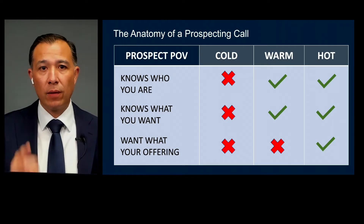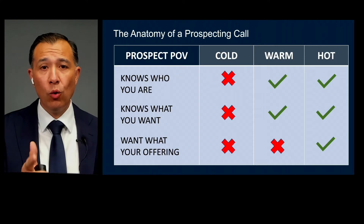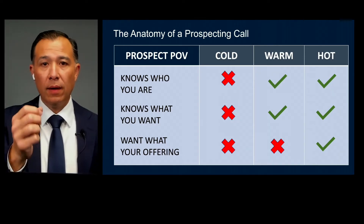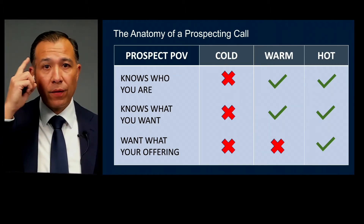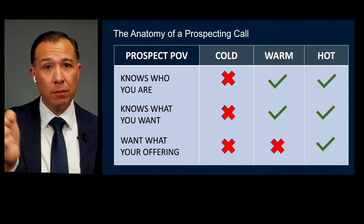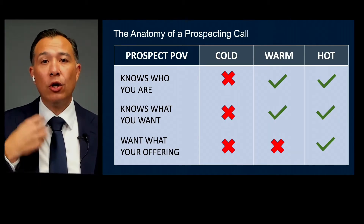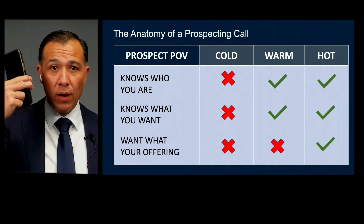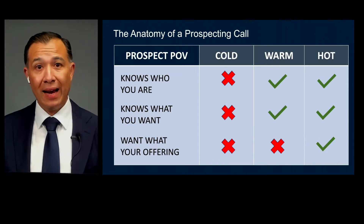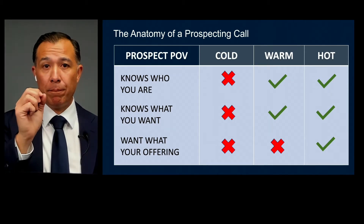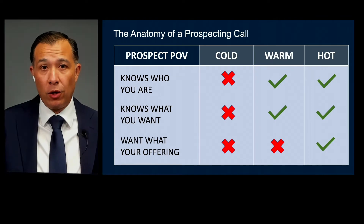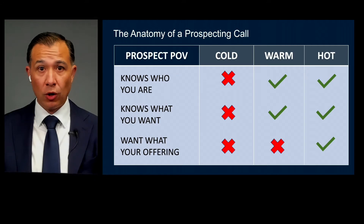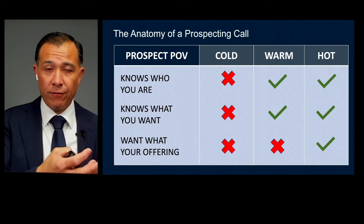So let's talk about the anatomy of a prospecting call. The two questions are: who are you, and what do you want — and what are you offering? Think about when an unidentified number calls you. The first question is: who's calling me? We have caller ID. I have a supercomputer in my pocket, and every phone number that could possibly know me is in it. I went and got tires a few weeks ago and had to put that number in my phone.